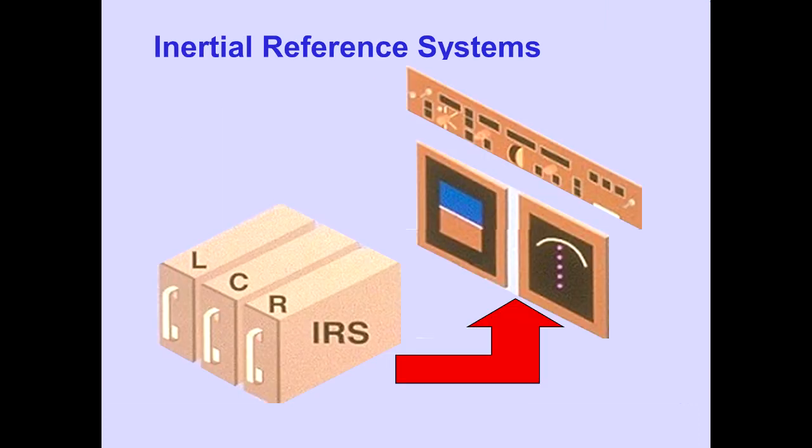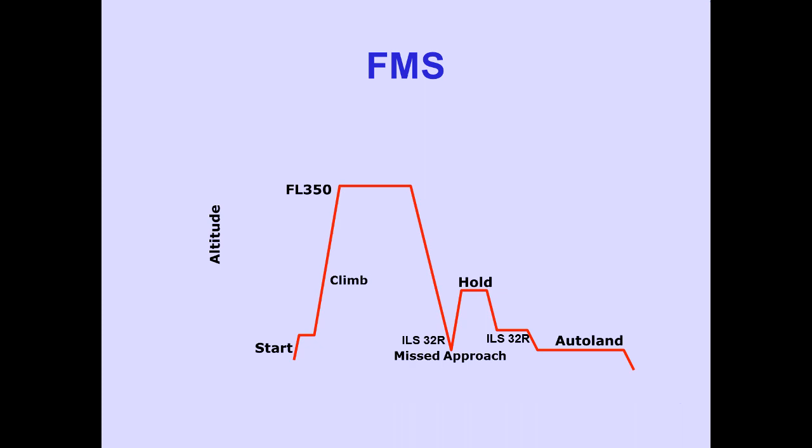Inertial reference systems provide position information to various airplane systems. The flight management system provides information to the autopilots and autothrottles, which enables the airplane to automatically fly an optimal flight profile.